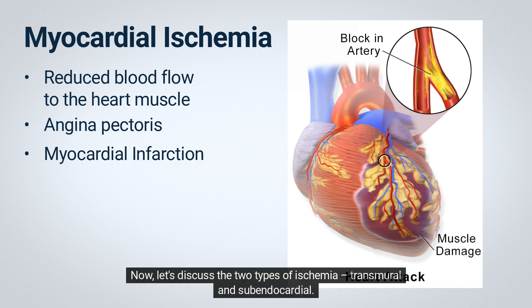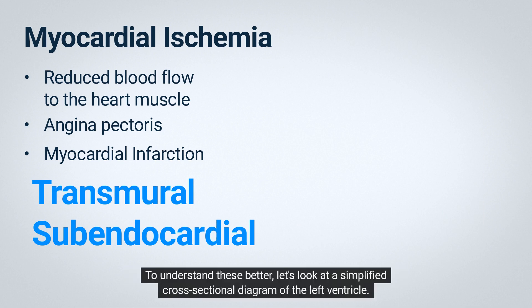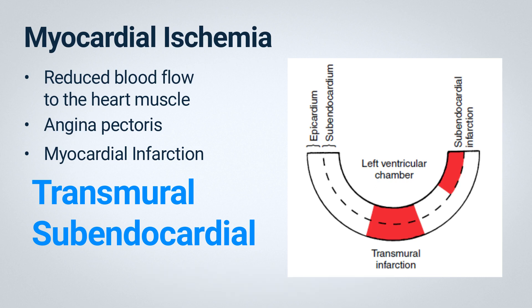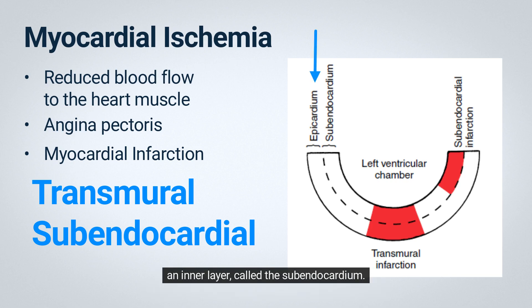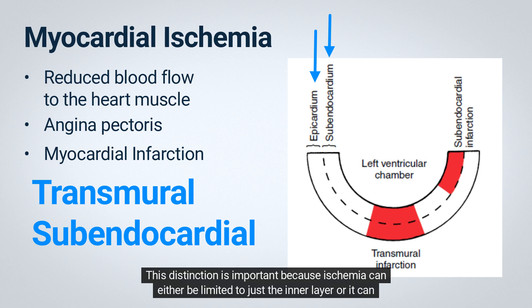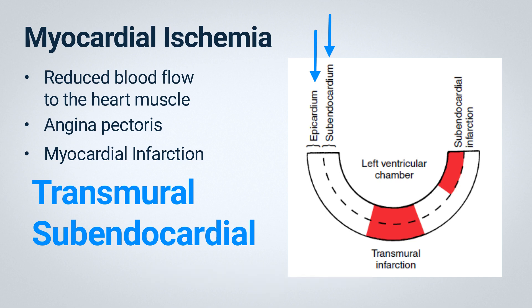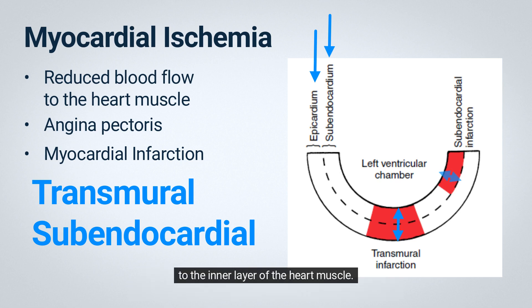Now let's discuss the two types of ischemia: transmural and subendocardial. To understand these better, let's look at a simplified cross-sectional diagram of the left ventricle. The left ventricle has an outer layer called the epicardium or subepicardium, and an inner layer called the subendocardium. Ischemia can either be limited to just the inner layer or affect nearly the entire thickness of the ventricular wall. Transmural ischemia involves the entire thickness of the wall, whereas subendocardial ischemia is limited to the inner layer of the heart muscle.